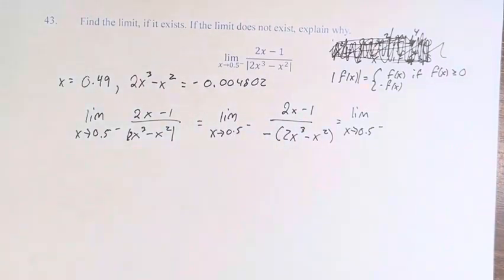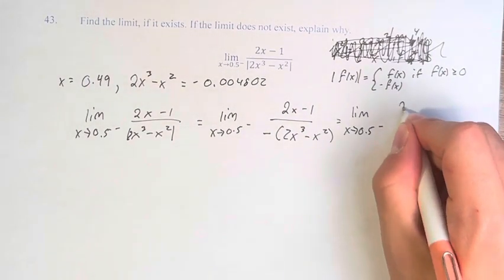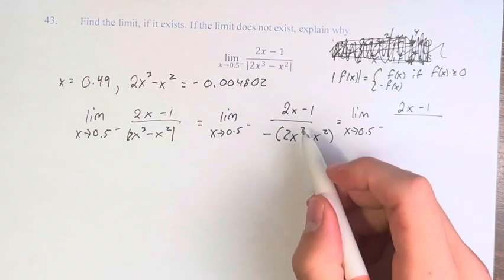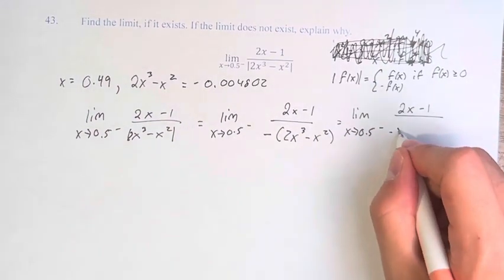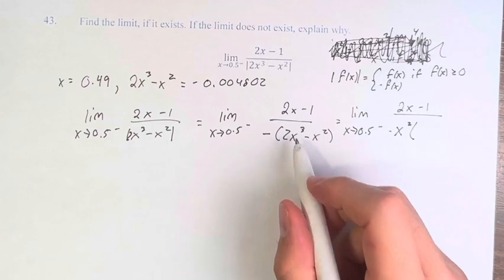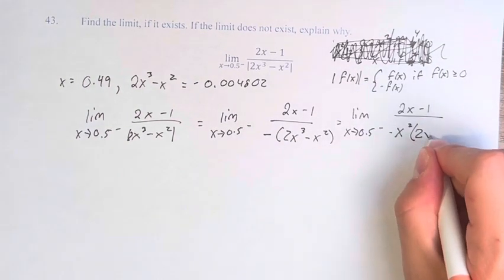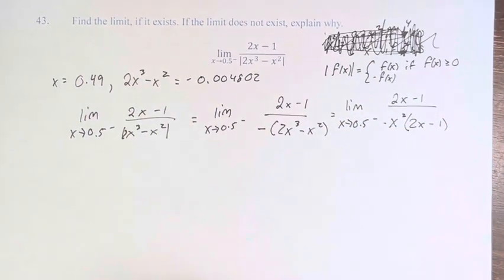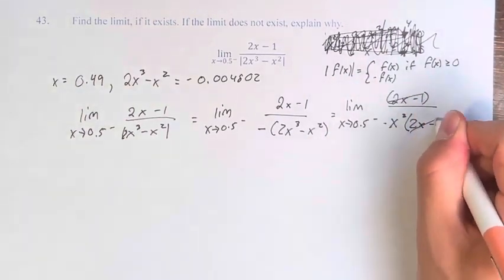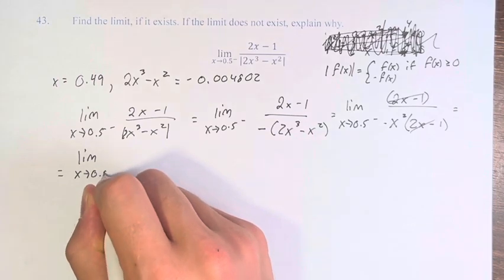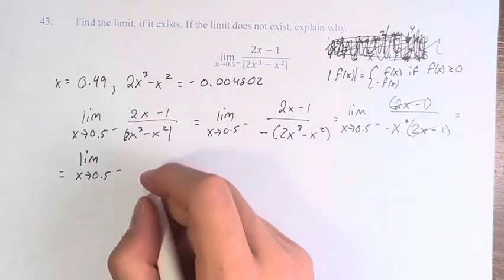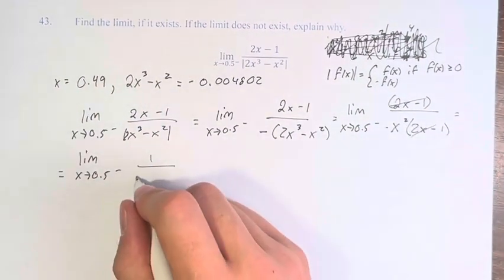And now we can proceed with the actual simplification of this fraction. So you have 2x minus 1 over, we want to factor out an x squared from these terms. So we have negative, factor out an x squared, we're left with 2x here minus 1. 2x minus 1 and 2x minus 1 cancel each other out. We're left with the limit as x approaches 0.5 from the left of just 1 on top, and on the bottom, negative x squared.